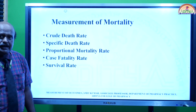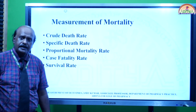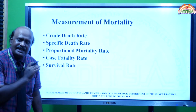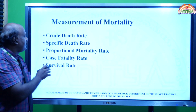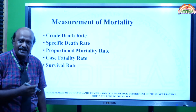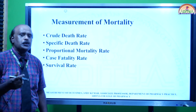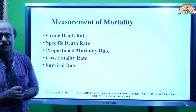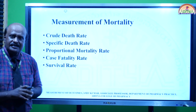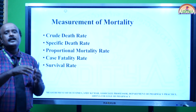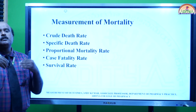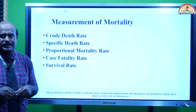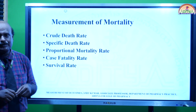To recap, the five methods for measurement of mortality are: crude death rate, specific death rate, proportional mortality rate, case fatality rate, and survival rate. In the next class, I will discuss how to measure morbidity. Thank you.